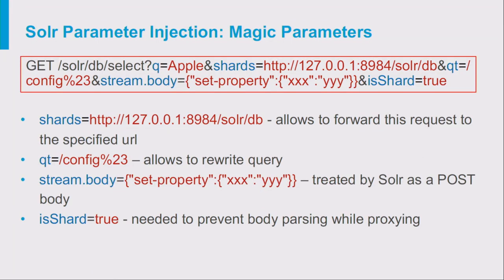These parameters are meant to be used internally only. By sending them, we're telling Solr not to process the request at all, but rather to redirect it to a specified shard URL. In the Qt parameter and the stream body, we can completely rewrite the request URL, URI, or the stream body. You might think of it as a very powerful SSRF vulnerability.